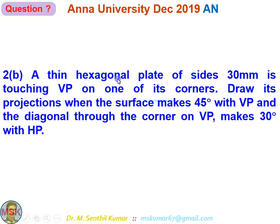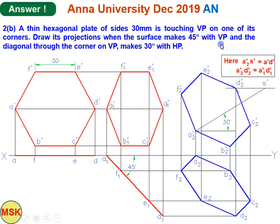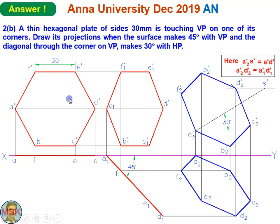A thin hexagonal plate of side 30 mm is touching VP on one of its corners. Draw its projections when the surface makes 40 degrees with VP and the diagonal through the corner on VP makes 30 degrees with HP. This is a double inclination problem. Correlate the answer with the question and get to know the details by yourself.